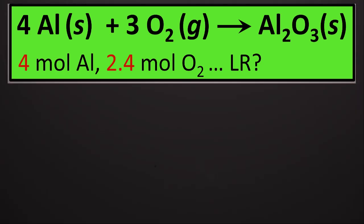This problem tells us that we have four moles of aluminum reacting with three moles of oxygen to produce two moles of aluminum oxide. The problem also tells us that we are starting out with four moles of aluminum and 2.4 moles of oxygen. And we need to find which one of these two reactants — the aluminum or the oxygen — is the limiting reactant.